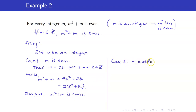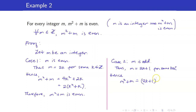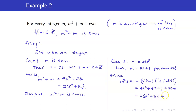For Case 2, m is odd. Thus m = 2k + 1 for some integer k. And so m² + m = (2k + 1)² + (2k + 1) = 4k² + 4k + 1 + 2k + 1, which can be written as 2(k² + 3k + 1). Therefore m² + m is even. In both cases, we have shown that m² + m is even.